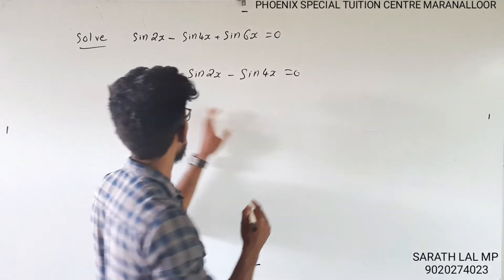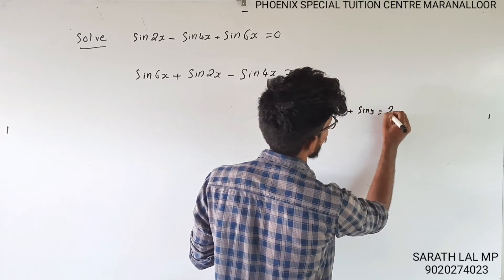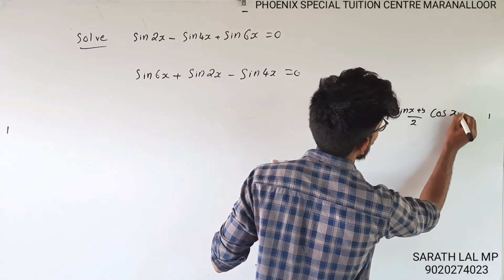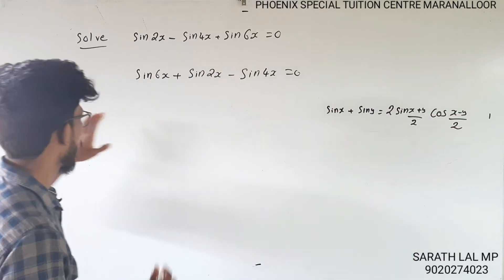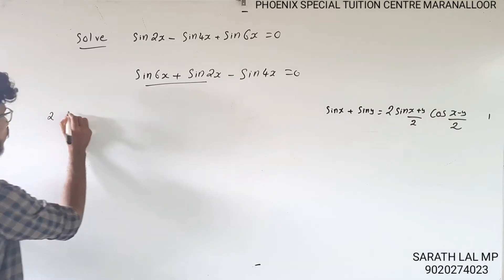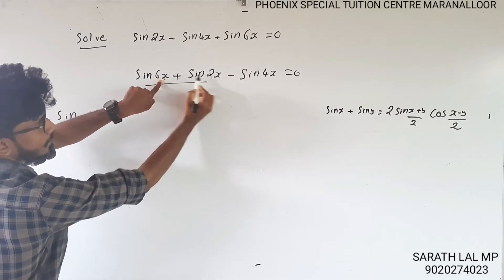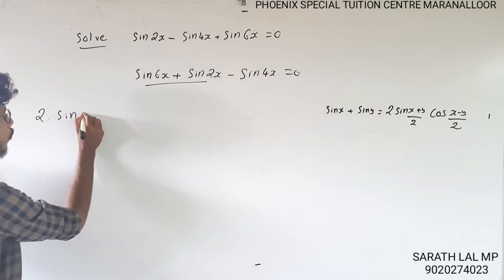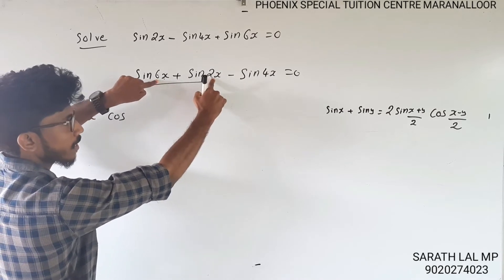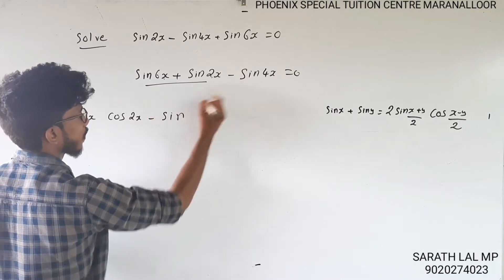We have the formula: sinx + siny = 2·sin((x+y)/2) · cos((x-y)/2). Applying this formula: sin6x + sin2x = 2·sin((6x+2x)/2) · cos((6x-2x)/2) = 2·sin4x · cos2x. Minus sin4x remains.